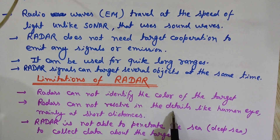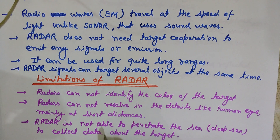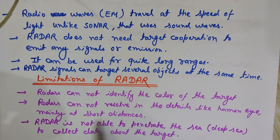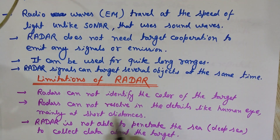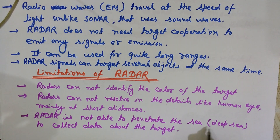Radars cannot resolve details like the human eye, mainly at short distances. It is easier to get information from objects situated at large distances in comparison to objects at smaller distances. With the human eye, we can resolve objects in greater detail when they are near, but radar works better when the object is at some distance. If the object is too close, it becomes difficult to analyze it with radar.